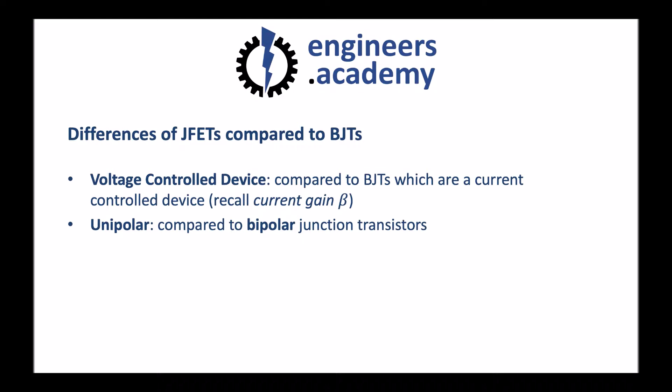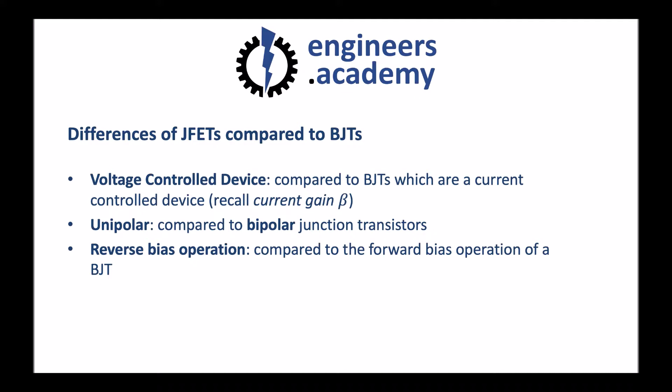Another difference is that J-FETs are unipolar compared to bipolar junction transistors. We'll see why when we look at the construction of the bipolar junction transistor as compared to the J-FET in just a second. The J-FET also functions by using reverse bias operation compared to the forward bias operation of a bipolar junction transistor. We needed to apply a positive current to the base of the transistor in a bipolar junction transistor in order to create a current from the collector to the emitter. It's actually a negative voltage that we're going to apply to the J-FET.